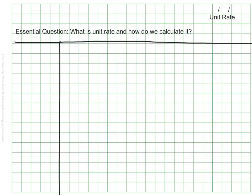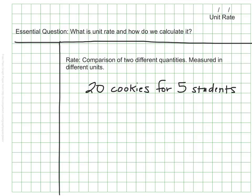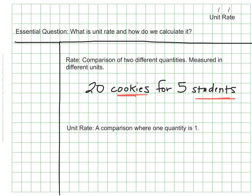We've been working a lot with ratios. Like ratios, rates are a comparison of two different quantities. These quantities are measured in different units. For example, there are 20 cookies for five students — we are looking at cookies as one unit and students as a second. A unit rate is a particular type of rate. In a unit rate, we're still comparing two quantities, but it's a comparison where one of the quantities is the value one.